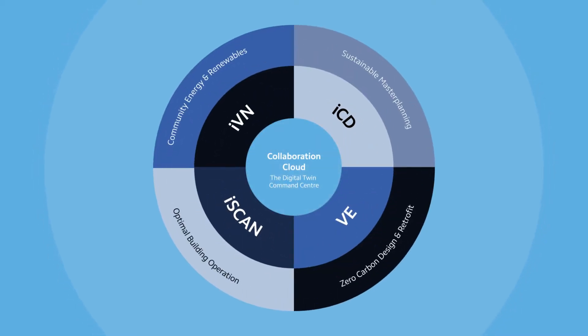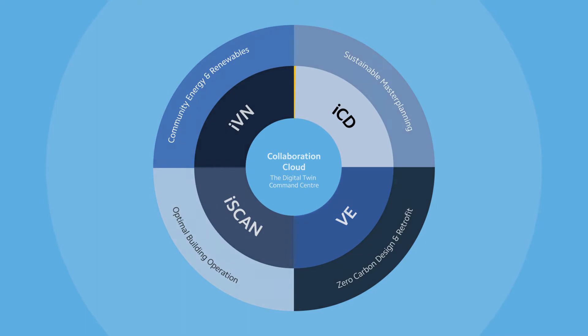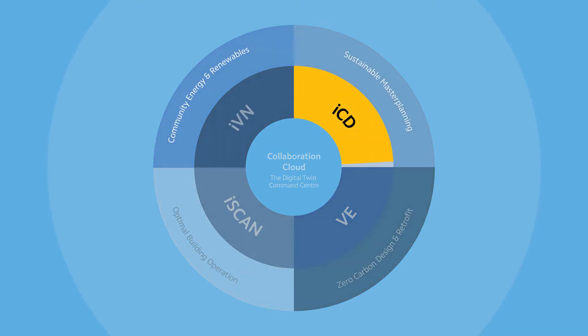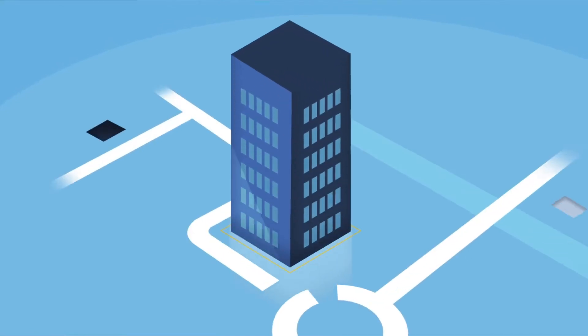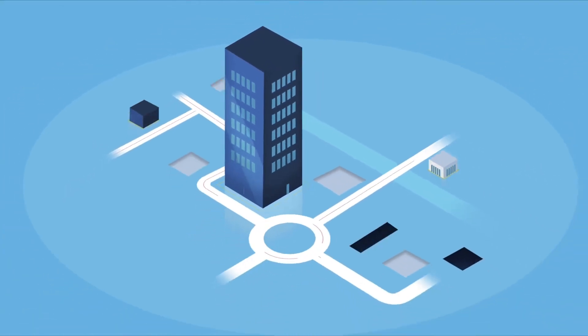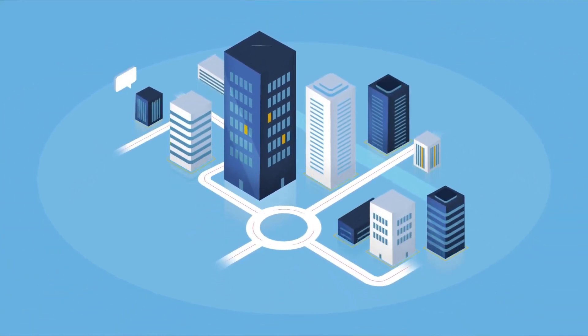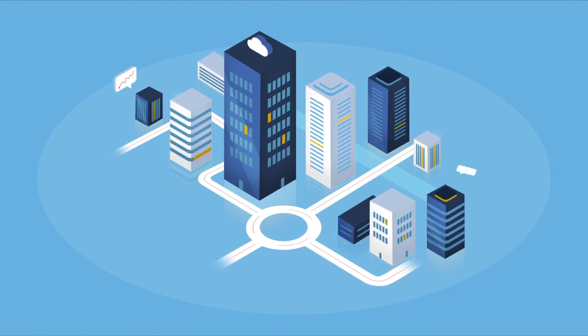ICD is the 3D urban design and master planning tool of the ICL Digital Twin Platform, providing the information needed to make early design stage decisions with sustainability in mind. Scalable from a simple campus to a wider community or city, ICD uses our proven building physics simulation engine to provide quick and robust results.